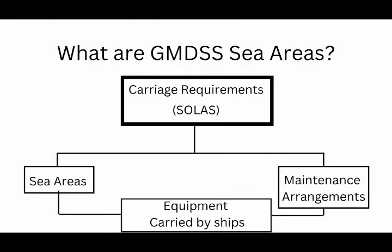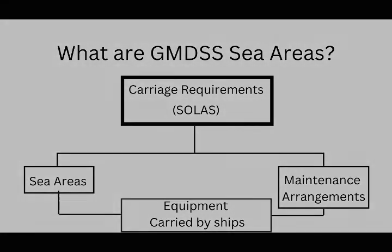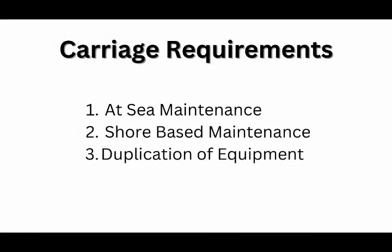Now we have understood functional requirements, sea areas, and the carriage requirements per sea area. The next topic is availability of radio equipment. The difference between carriage requirements on the basis of sea area and availability of radio equipment is: availability means you are given options — for example, instead of one VHF you can carry two VHFs, instead of one MF you can carry two — whereas carriage requirements state the minimum you must carry.